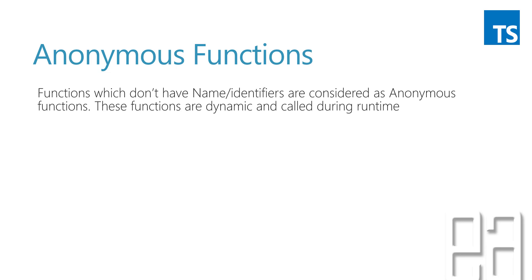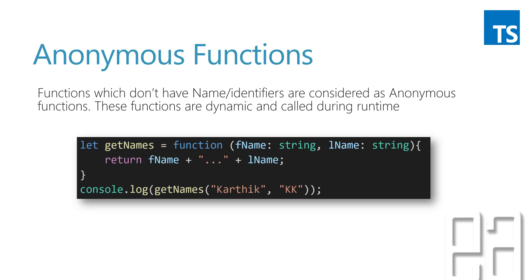A function which doesn't have a name or identifier is considered as an anonymous function. These functions are dynamic and are called during runtime. It has the function keyword but it is not followed by the name of the function — the name is missing. It has the same kind of parameters and a return value, like first name plus last name. You assign the function directly to a variable.